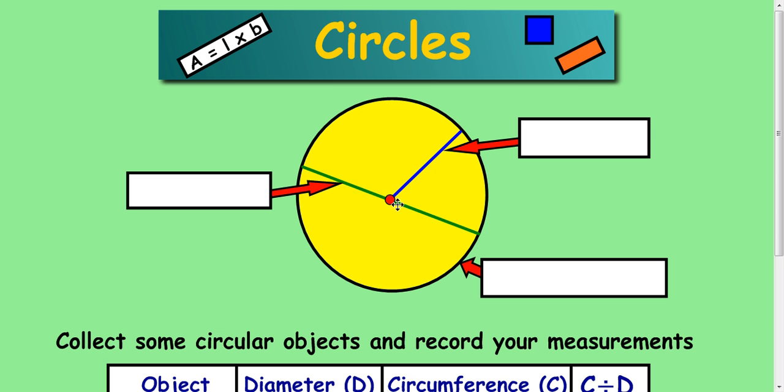Now if you look at the yellow circle in front, it's important first of all to be able to identify certain parts of the circle. The first part to identify is this blue line. This blue line is a line that goes from the center point to the outside of the circle and this is called a radius.